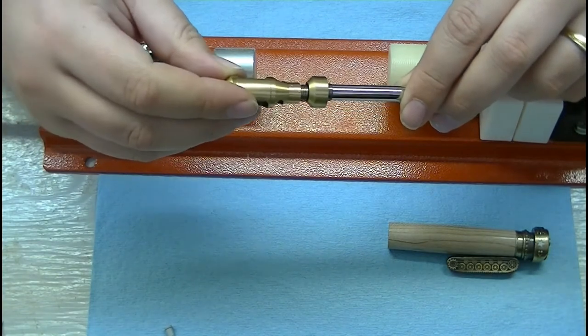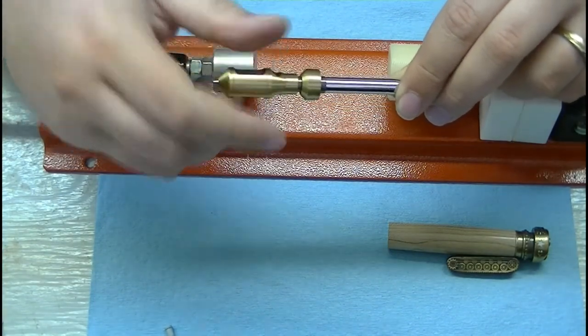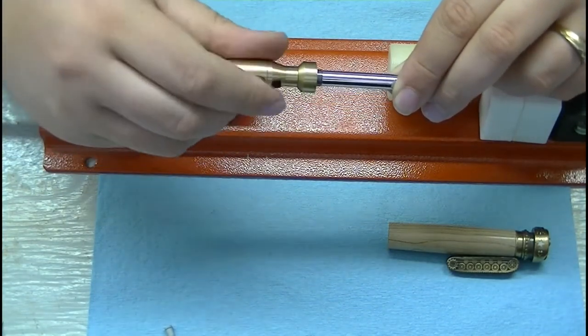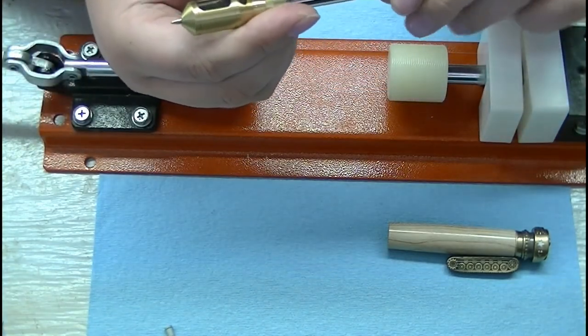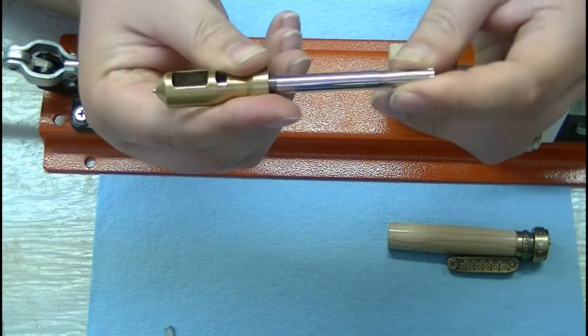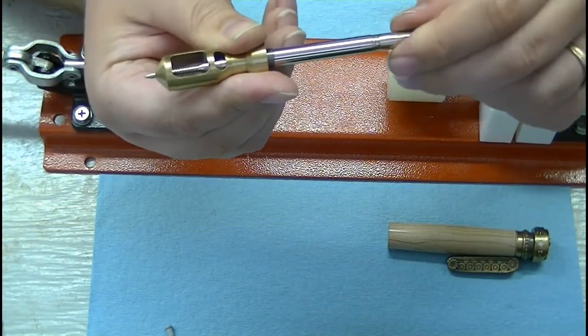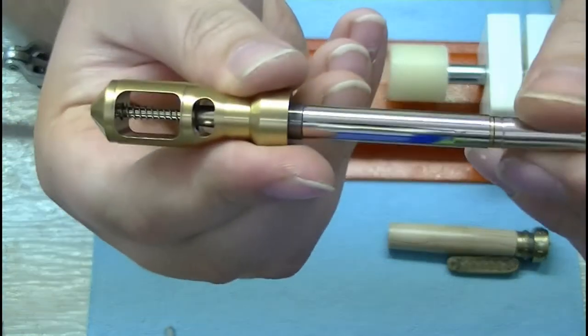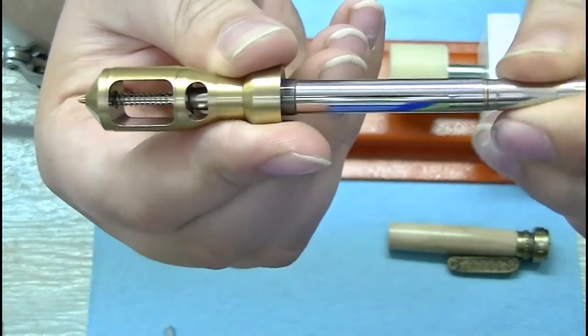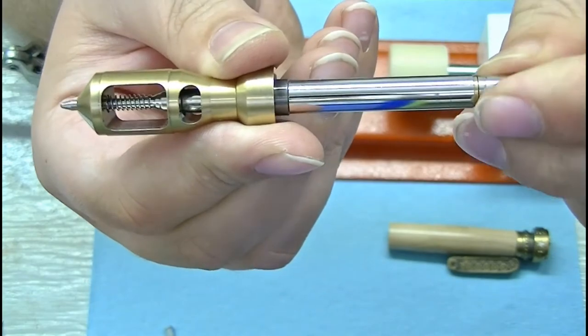And then we thread it on like so, and then we check our mechanism make sure that it's working and it certainly is. So we turn the mechanism, it pushes the ink in and out just like this. You see that working there.